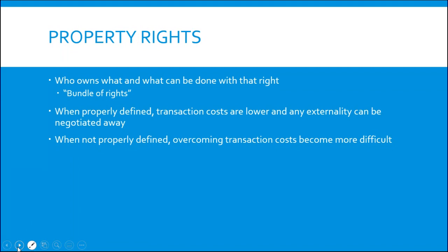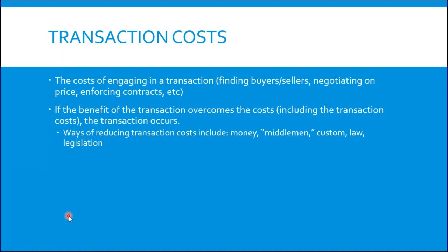Another reason externalities aren't negotiated away is transaction costs. Transaction costs are the costs of engaging in a transaction — you need to find buyers and sellers, negotiate on price and quantity, enforce contracts, and so on. These transaction costs exist everywhere. If you're going down the road to Target, there are still transaction costs because you need to get in your car and drive there. If the benefit of the transaction overcomes the costs, including transaction costs, the transaction occurs. We have lots of ways of reducing transaction costs: money is a big one, middlemen such as wholesalers and retailers reduce transaction costs, and there are also laws and legislation that reduce transaction costs — one of which is enforcing and defining property rights.